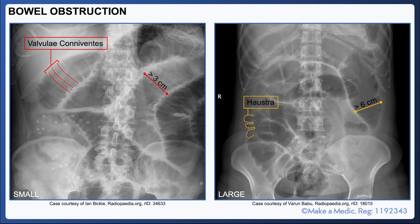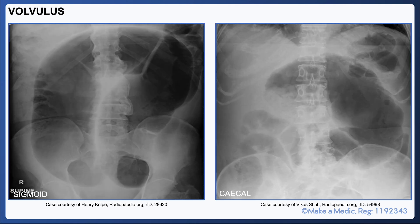In large bowel obstruction, the distended loops are usually greater than six centimeters in diameter and they have haustra, which are small pockets along the length of the large bowel that give it a segmented appearance. Furthermore, distended loops of bowel tend to be primarily present around the outside of the film in large bowel obstruction, whereas they tend to be more central in small bowel obstruction.